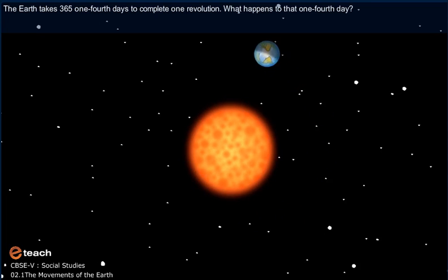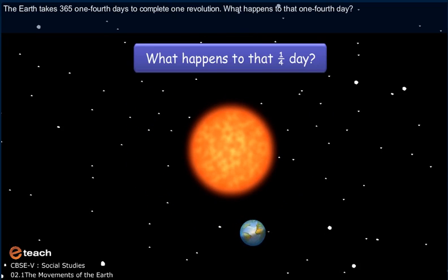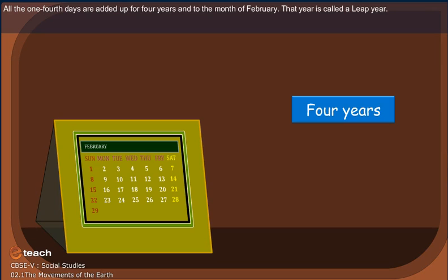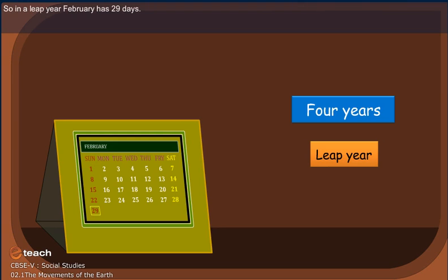The Earth takes 365 and one-fourth days to complete one revolution. What happens to that one-fourth day? All the one-fourth days are added up for four years to the month of February. That year is called a leap year. So, in a leap year, February has 29 days.